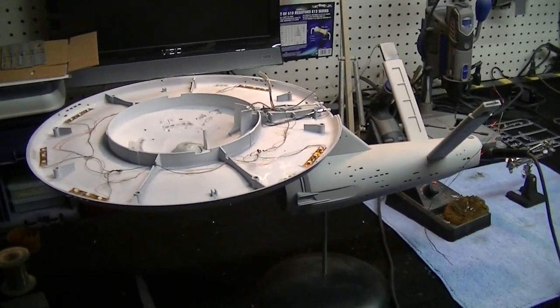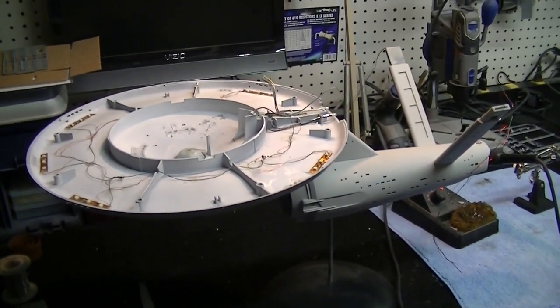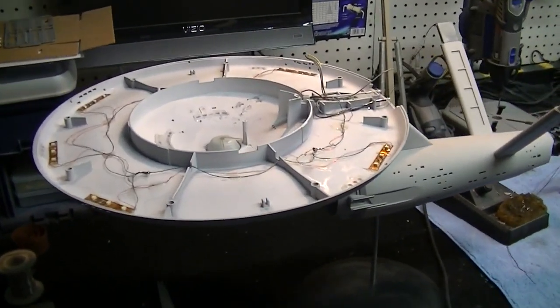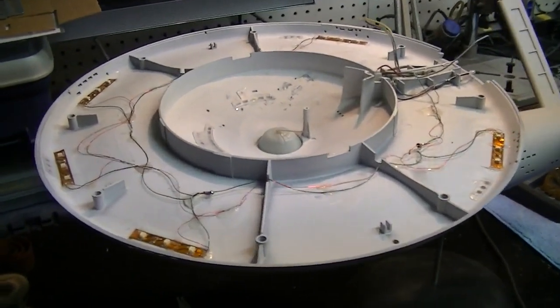Well hello there again everybody and welcome back. This is part seven of our Polar Lights 1/350 scale classic Enterprise buildup. You can see what I'm working on today is the saucer, and I'll take you around and show you what I'm doing.